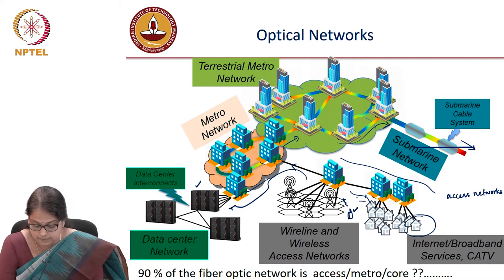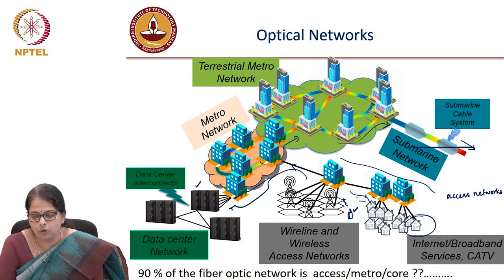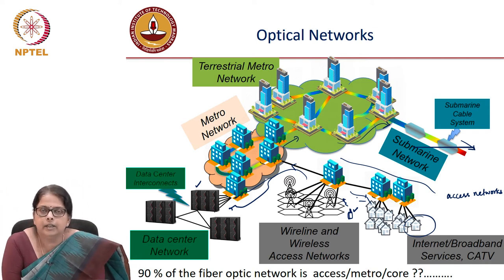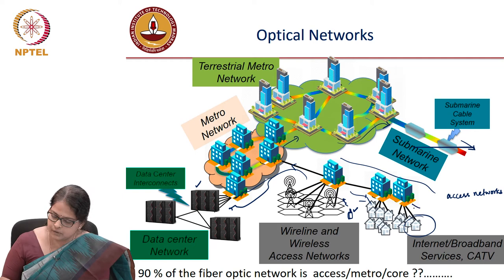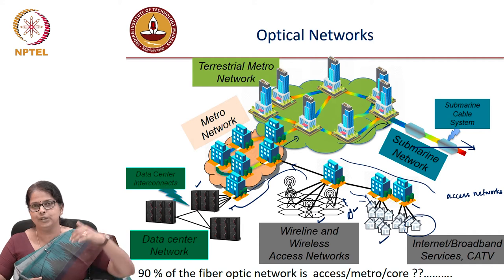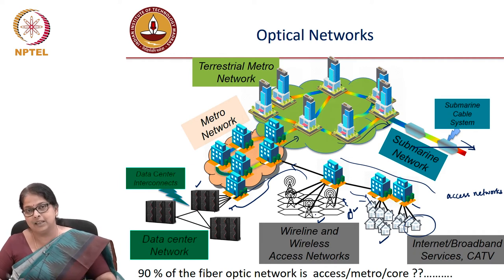A quick question: 90 percent of the optical network fiber is in which part of the network — access, metro, or core? It turns out that even though the core fiber network connects multiple continents over very large distances, the number of users in access networks is really large. The amount of fiber deployed in the access network — the last-mile connectivity between the user and the metro or core network — is probably the highest and ever increasing.